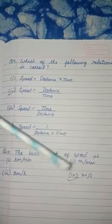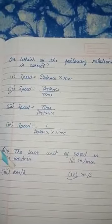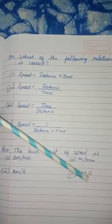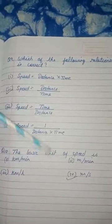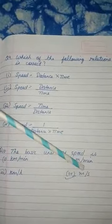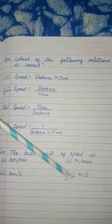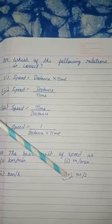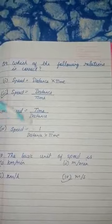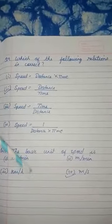Question number 10: The basic unit of speed is — first, kilometer per minute; second, meter per minute; third, kilometer per hour; fourth, meter per second. The basic unit of speed is meter per second, so you will take the fourth option. Children, do this in your science copies. Thank you.